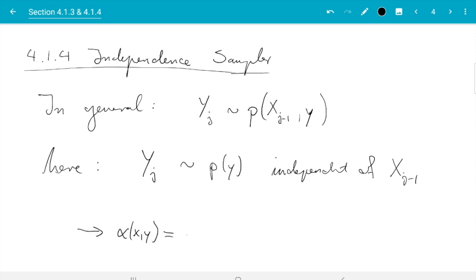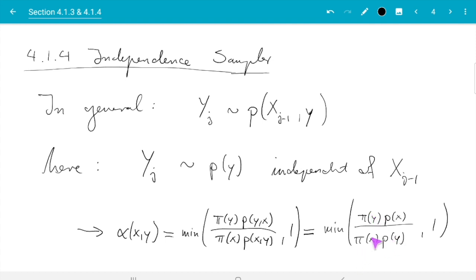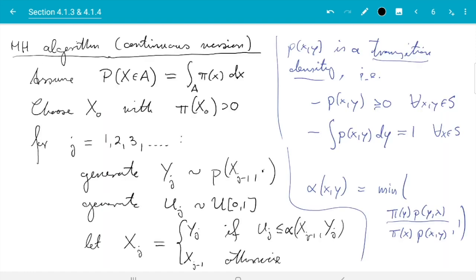If p(x,y) is just p(y) and doesn't depend on x, then α(x,y), which in general is π(y)p(y,x) divided by π(x)p(x,y) and 1, becomes the minimum of π(y)p(x) divided by π(x)p(y) and 1. So the x and y are crossed over—π(y) is on top, p(y) is at the bottom, and the other way around for x.